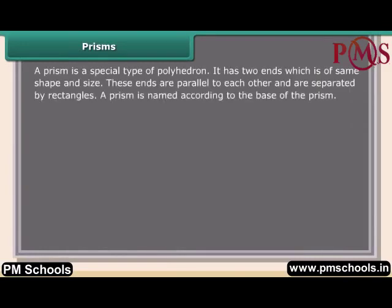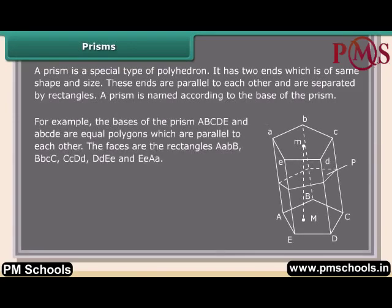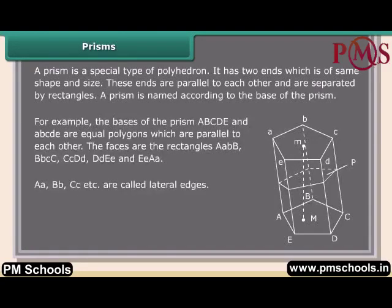A prism has two ends of the same shape and size. These ends are parallel to each other and are separated by rectangles. For example, the bases of a prism are equal polygons parallel to each other. The rectangular regions connecting the bases are the lateral faces, and the line segments connecting corresponding vertices of the two bases are called lateral edges.